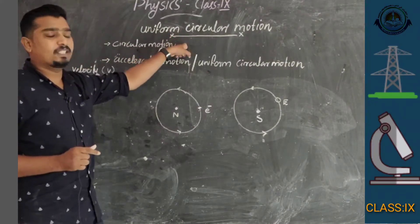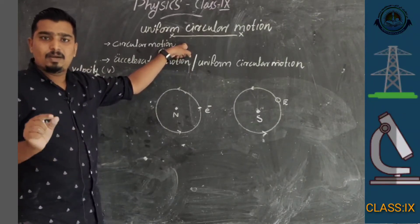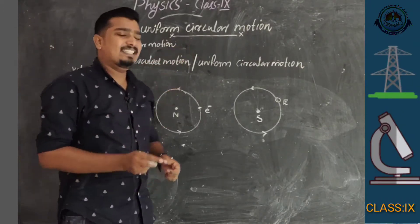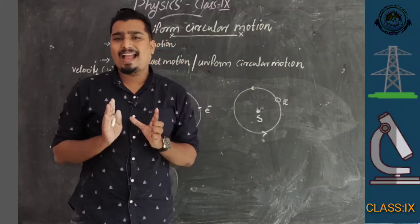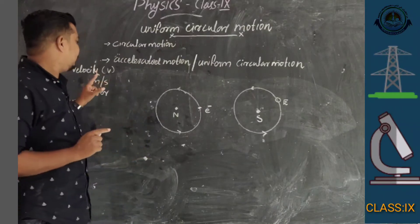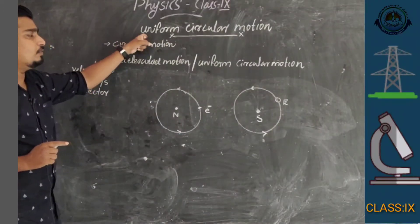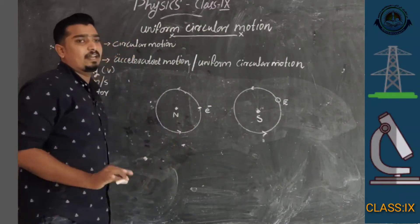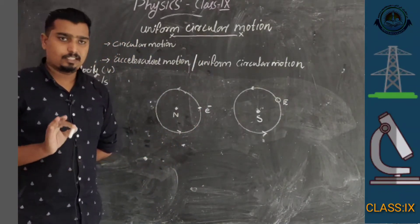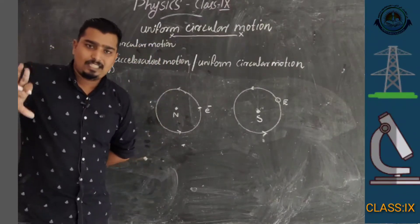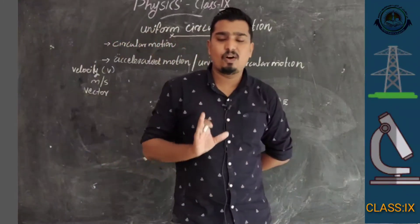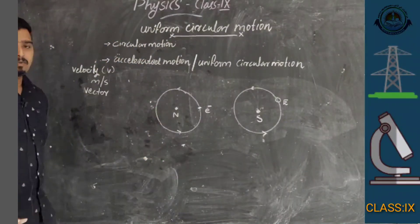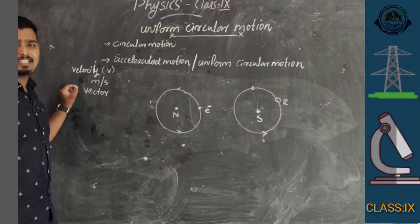In the case of uniform circular motion, if a body moves along a circular path and there is no change in the magnitude of velocity, that circular motion is called uniform circular motion. So in uniform circular motion, the velocity is uniform — there is no change in the magnitude of velocity.